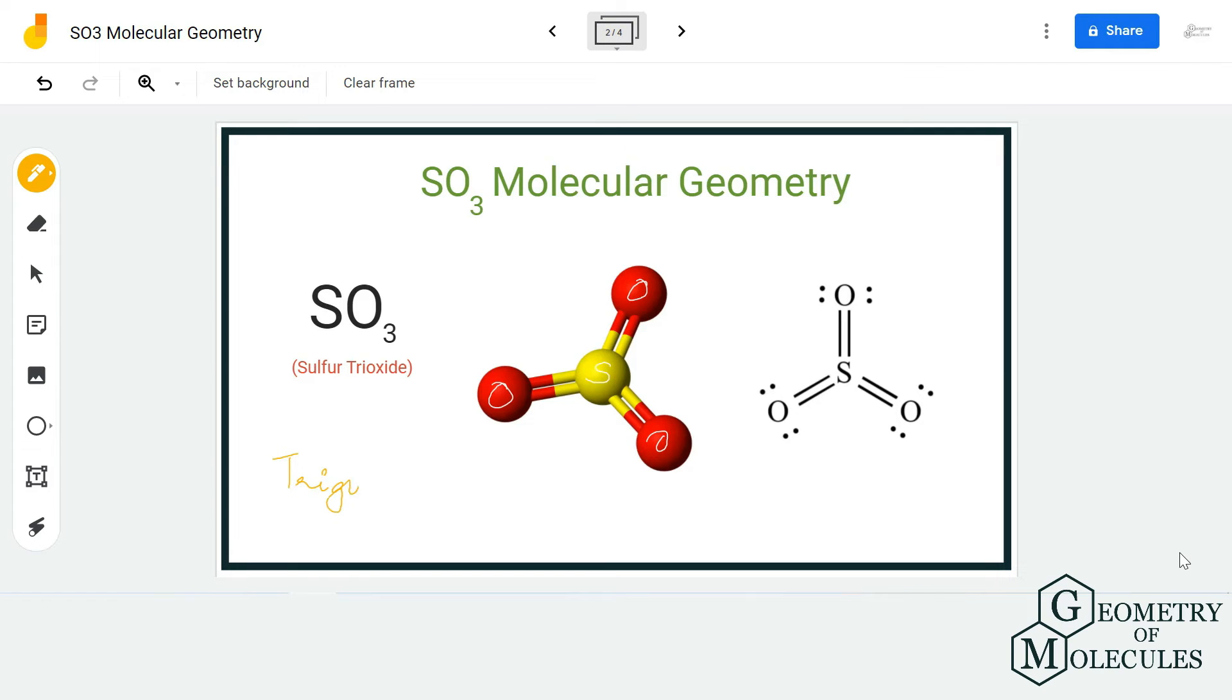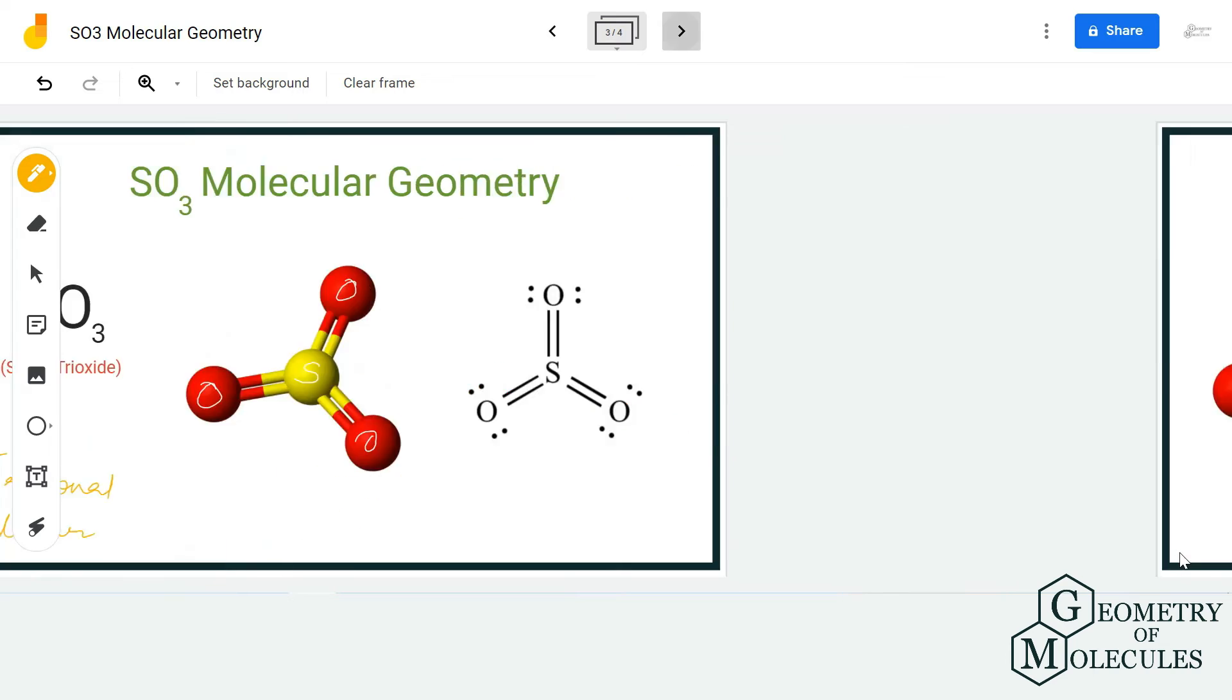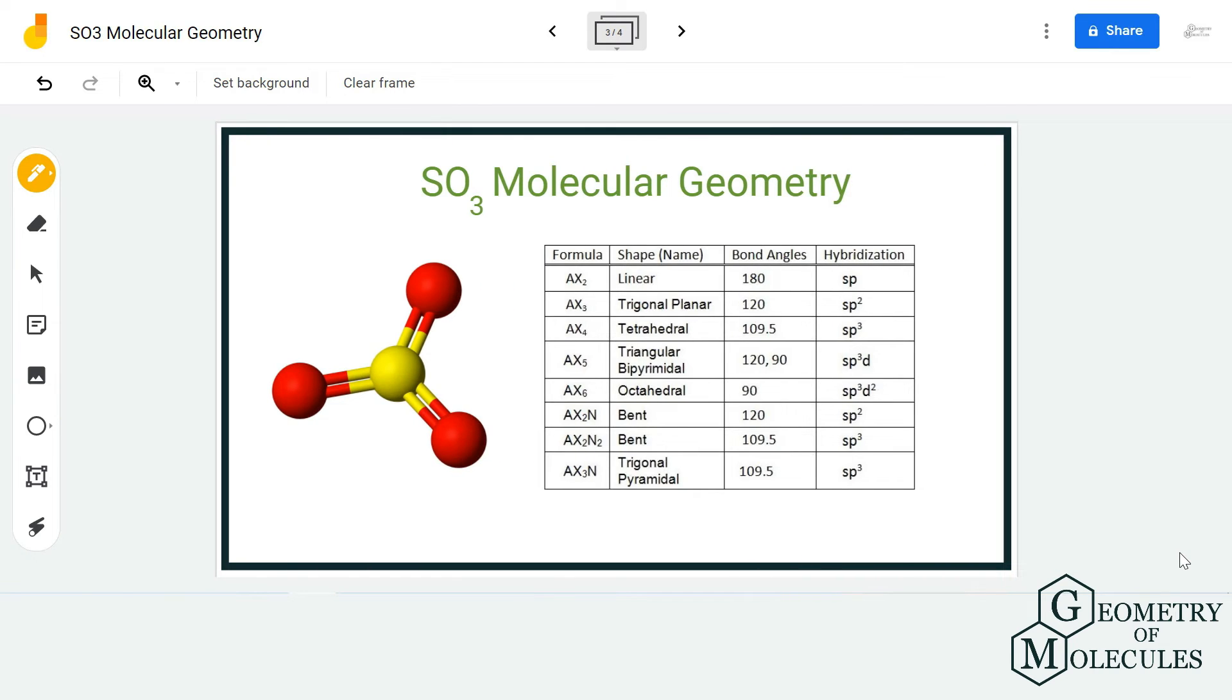Let's confirm it using the AXN notation method. The AXN notation method is the easiest way to find out molecular geometry. A stands for central atom, X is the number of atoms forming bonds with the central atom, and N is the number of lone pairs present on the central atom.